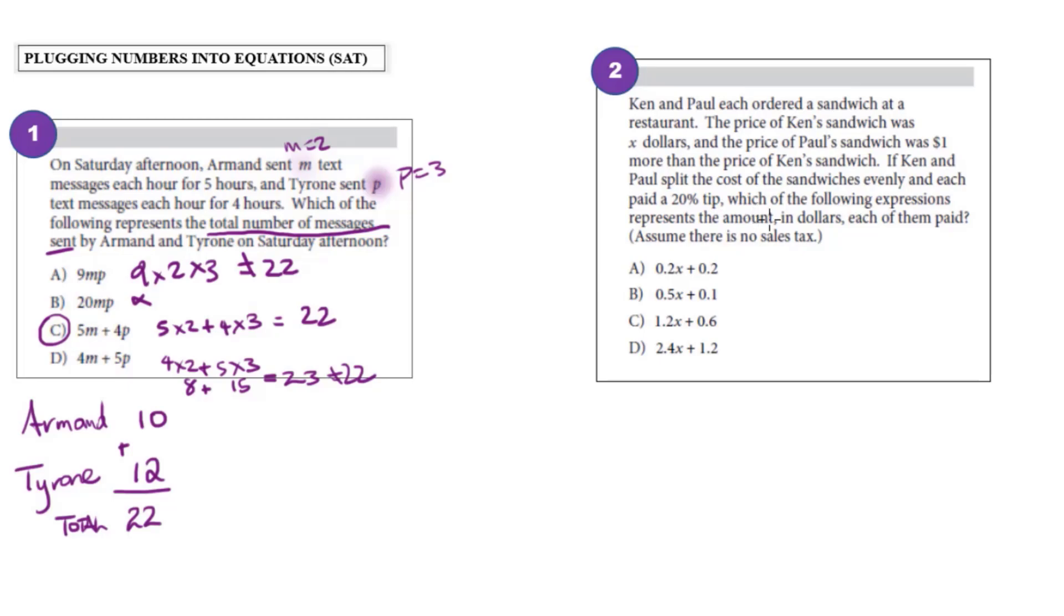If Ken and Paul split the cost of the sandwiches evenly and each paid a 20% tip, which of the following expressions represent the amount in dollars each of them paid?